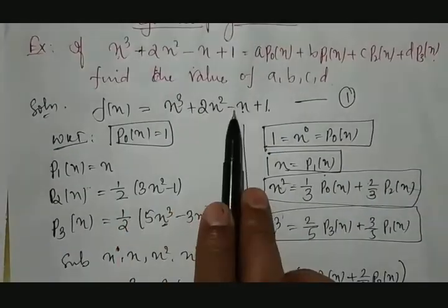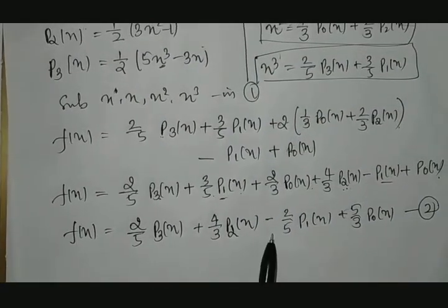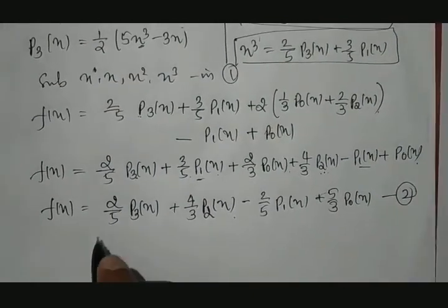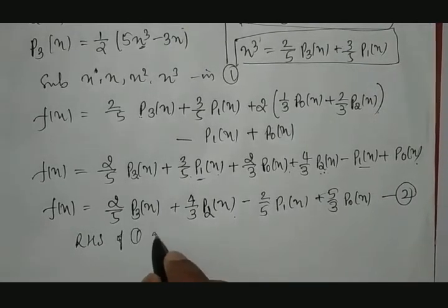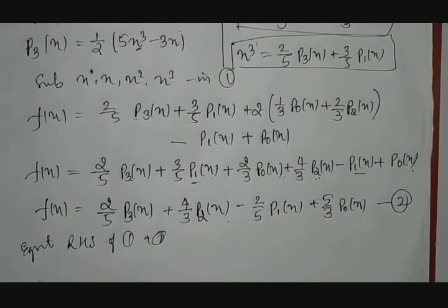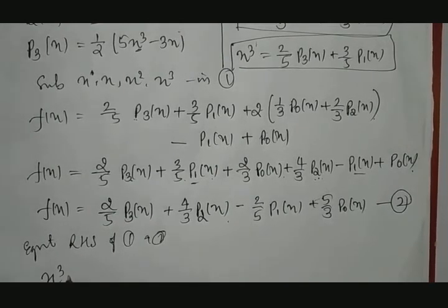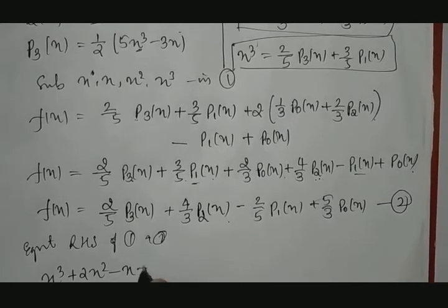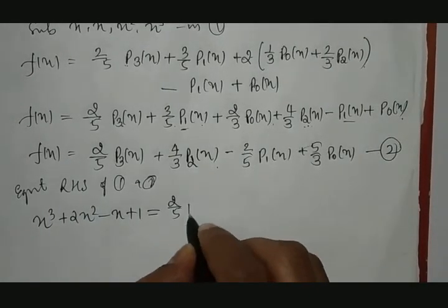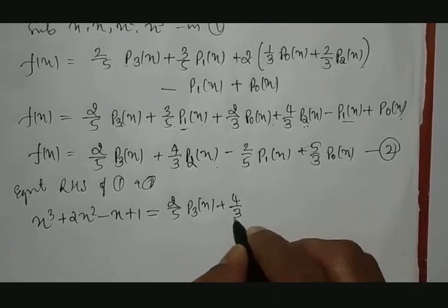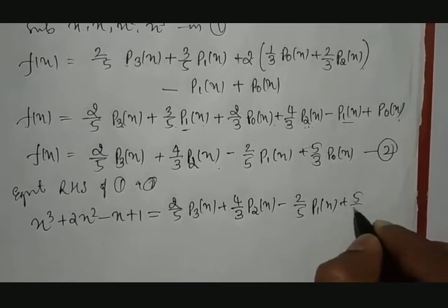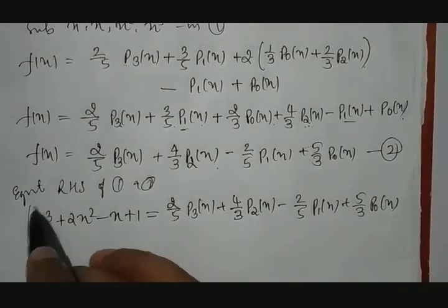Since f(x) equals both equation 1 and equation 2, the RHS of equation 1 and equation 2 are equal. So we equate them. Therefore, x³ + 2x² − x + 1 equals 2/5 · P3(x) + 4/3 · P2(x) − 2/5 · P1(x) + 5/3 · P0(x). This is our result.